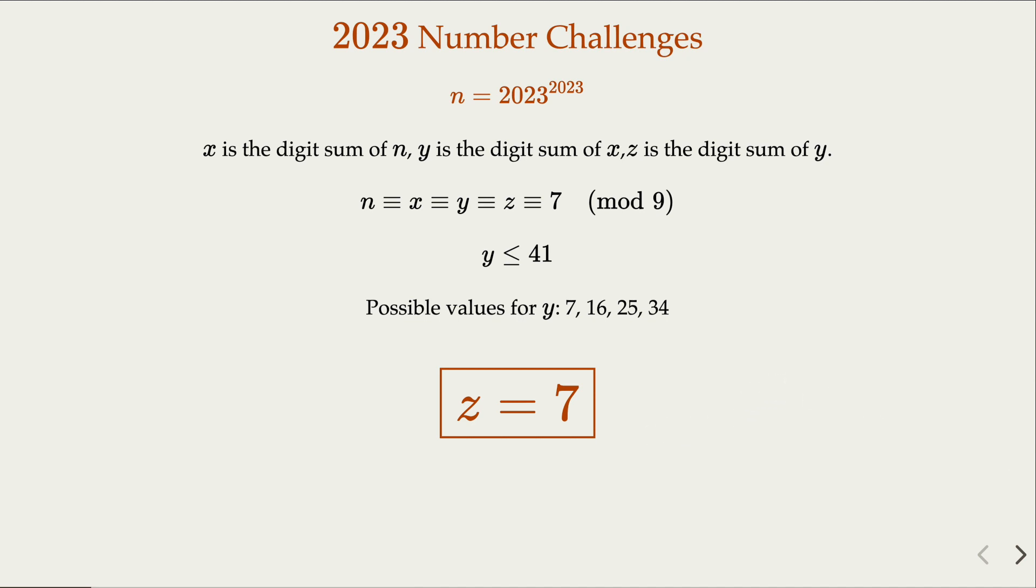So again, here we rely on the fact that the number of digits is congruent to the number itself when we look at the mod 9 value. Another thing is about how to have a rough estimate of the digit sum.